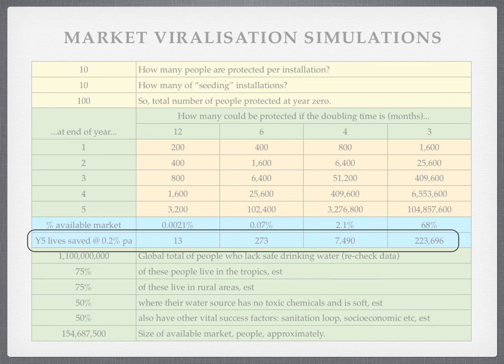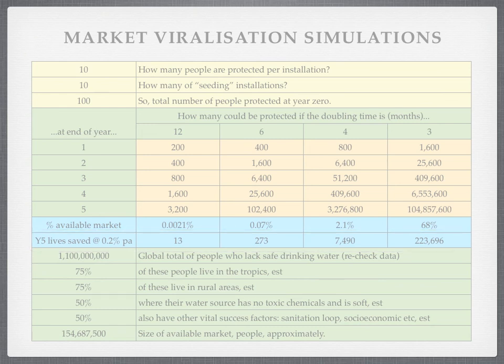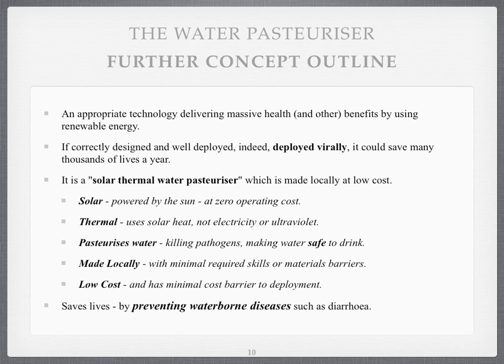Those are the numbers of lives potentially saved. I'd like you to join me to think: is this possible? To summarise, the solar water pasteuriser is an appropriate technology for communities. It delivers massive health and other benefits by using renewable energy and operates at low cost. If correctly designed, well deployed, and deployed virally, it could save many, many thousands of lives — even millions of lives, eventually. It's a solar thermal water pasteuriser, made locally at low cost, powered by the sun, using solar heat to kill pathogens. It's made locally with minimal skills or material barriers. It's all about overcoming barriers to make the viralisation work, and again there's minimal cost as well.